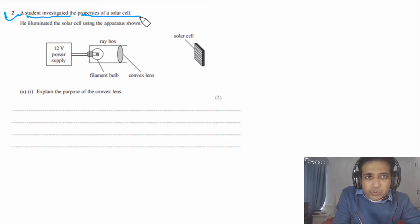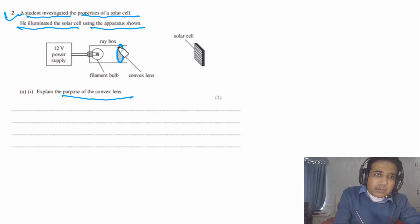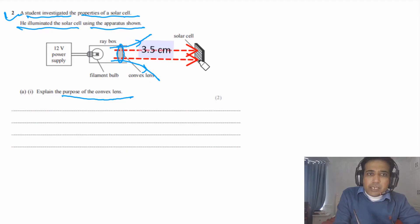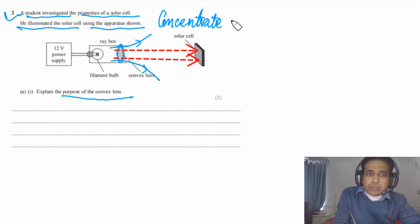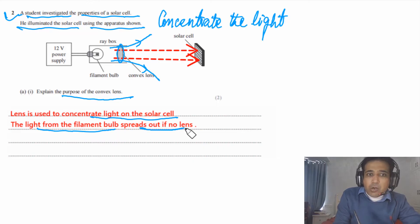Question 2 says a student investigated the properties of a solar cell. Part A1 asks to explain the purpose of the convex lens. Without a convex lens, the light from the filament lamp will spread out. The convex lens is used to concentrate the light onto the solar cell. For two marks: state that the lens concentrates light on the solar cell, and that light from the filament lamp spreads out without it.